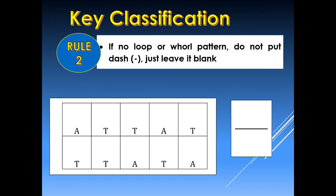The next rule in key classification is: if there is no loop pattern or whorl pattern — in other words, if the fingerprint patterns only contain an arch pattern, whether plain arch or tented arch — do not put a dash. Just like the final classification, simply leave it blank.